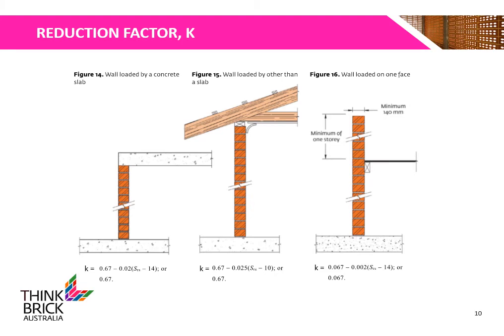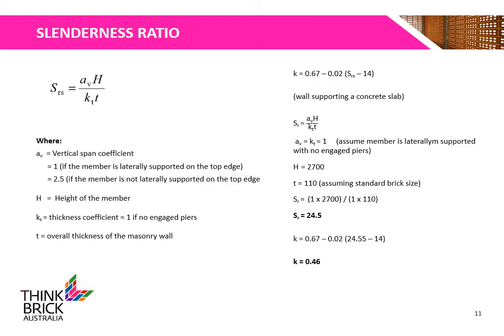The slenderness and eccentricity factor is determined from three conditions: a wall loaded by a concrete slab, a wall loaded by something other than a concrete slab such as a roof truss, or a wall loaded on one face. In our example, we will be using the condition where the wall is loaded by a concrete slab.